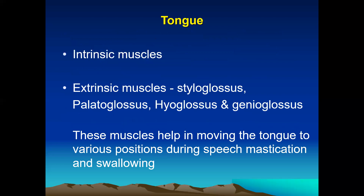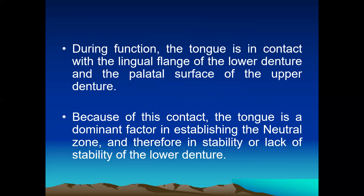Regarding the tongue, there are extrinsic muscles as well as intrinsic muscles. The major extrinsic muscles are styloglossus, palatoglossus, hyoglossus, and genioglossus. These muscles help in moving the tongue to various positions during speech, mastication, and swallowing. During function, the tongue is in contact with the lingual flange of the lower denture and the palatal surfaces of the upper denture.